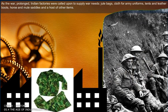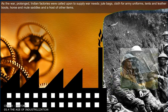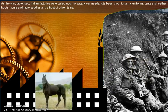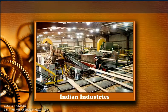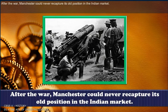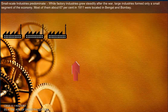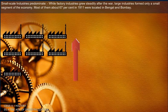Indian factories supplied jute bags, clothes for army uniforms, tents and leather boots, horse and mule saddles, and a host of other items. Over the war years, industrial production boomed. After the war, Manchester could never recapture its old position in the Indian market.